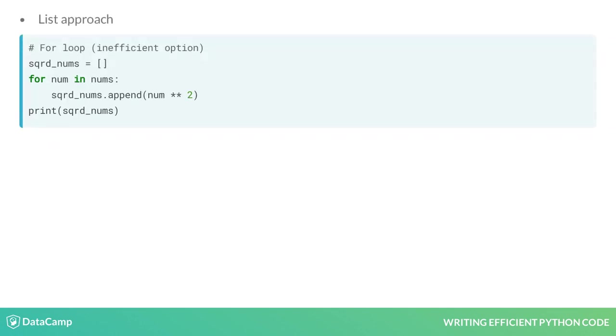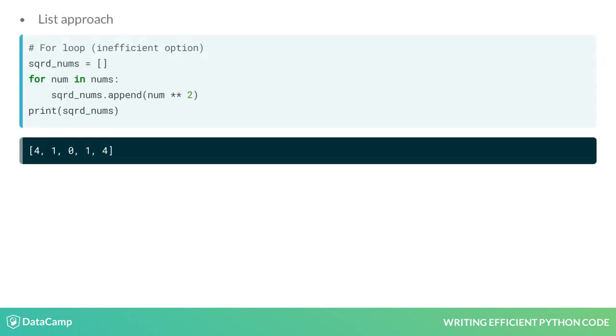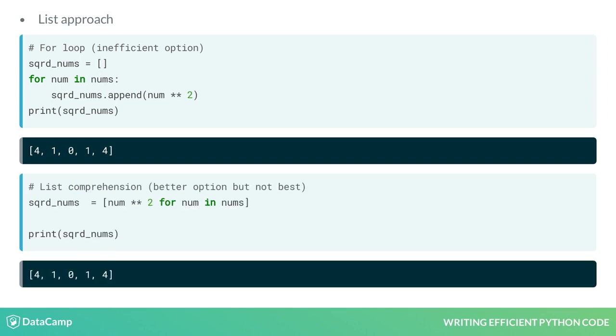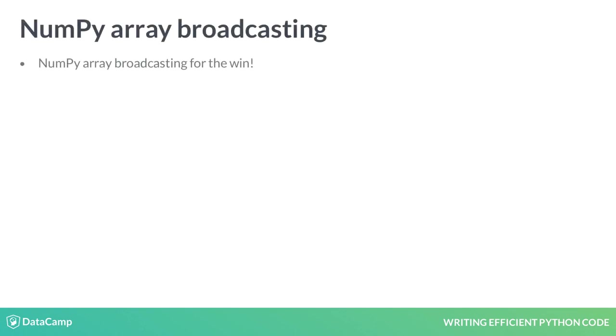We could square the values using a list by writing a for loop or using a list comprehension. But neither of these approaches is the most efficient way of doing this. Here lies the second advantage of NumPy arrays, their broadcasting functionality.